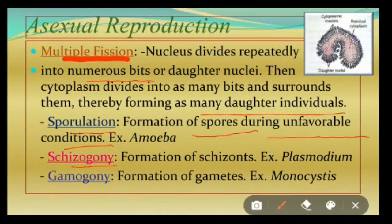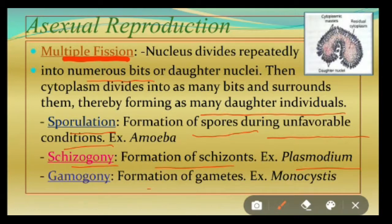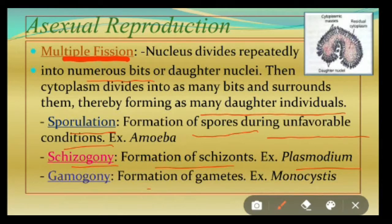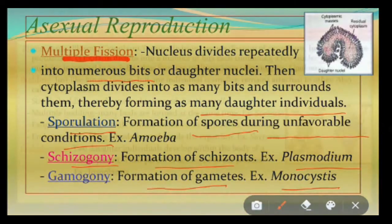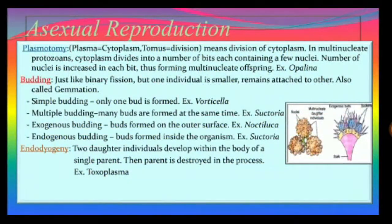Then schizogony, which is a type of asexual reproduction that takes place in Plasmodium, where schizonts are formed. These schizonts may divide to form other cryptozoites or merozoites in due course of time. Then gamogony — formation of gametes — especially in Monocystis.